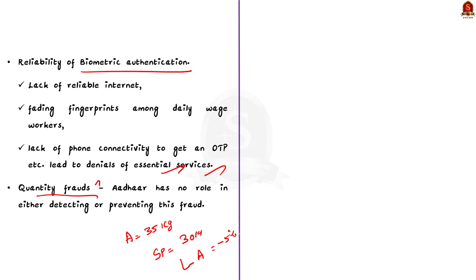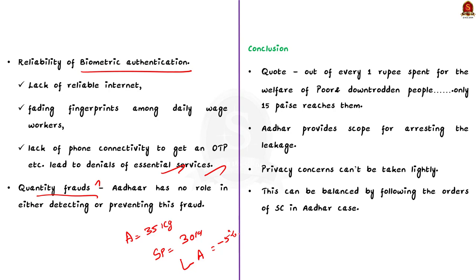These are some of the concerns regarding Aadhaar and this is how you have to write the second part of the answer. Now coming to the conclusion part. In the conclusion, you have to take a balanced position. You can quote former Prime Minister Rajiv Gandhi's famous remark — in 1985, Rajiv Gandhi stated that for every one rupee spent for welfare of the poor, only 15 paise reaches them. Aadhaar provides scope for arresting the leakage, but the privacy concerns surrounding the use of Aadhaar should not and cannot be taken lightly. A balance can be achieved by following the orders of the Supreme Court in the Aadhaar case.